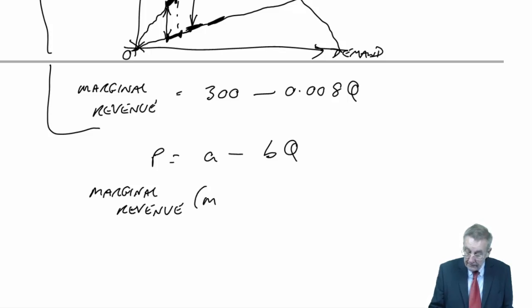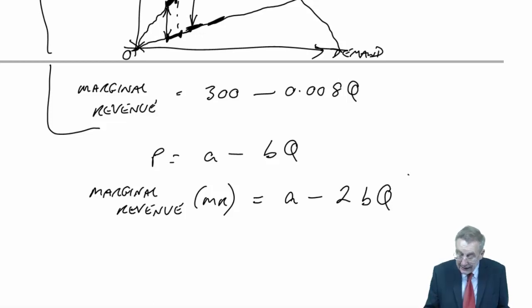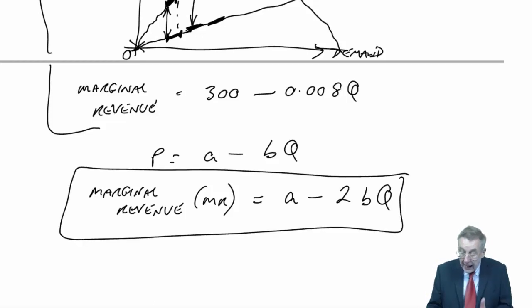or MR, is A minus 2BQ, where A and B are the same as in the price-to-demand equation.